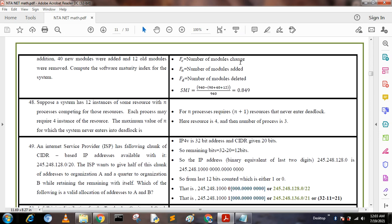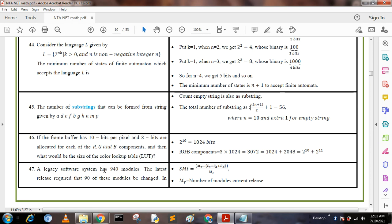So SMI = (940 - 90 - 40 - 12) / 940 = 0.849. These values 940, 90, 40, and 12 are all given in the question. We put these values and get the answer 0.849.